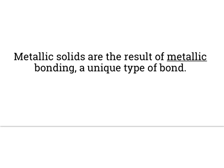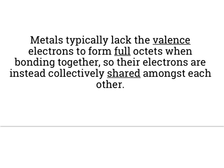Metallic solids are the result of metallic bonding, which is a rather odd type of bond. Metals typically lack the valence electrons to actually form full octets when they bond together. They normally have like two valence electrons, and we're trying to get to eight — two plus two is not eight. So instead of actually forming pairs of bonds, you end up having a group of metals that really share their electrons collectively.